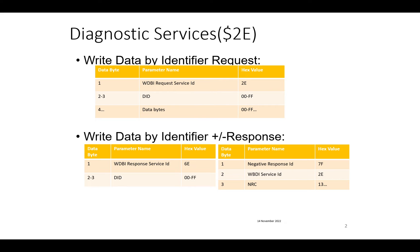When it comes to the request format, firstly the service ID 2E is followed by the data identifier, that is the DID number. So two bytes of the DID number are followed by the data bytes that need to be written into the ECU. Whatever length is configured, that many bytes of data need to be provided in the request.